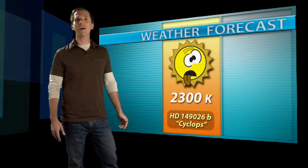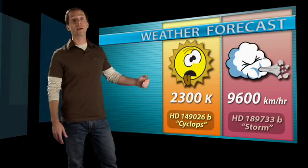These measurements are making astronomers the first interstellar weathermen. The 2007 record highs go to Cyclops, and the record winds were logged on Storm. But records seldom last, and exoplanetary weather is a young field.